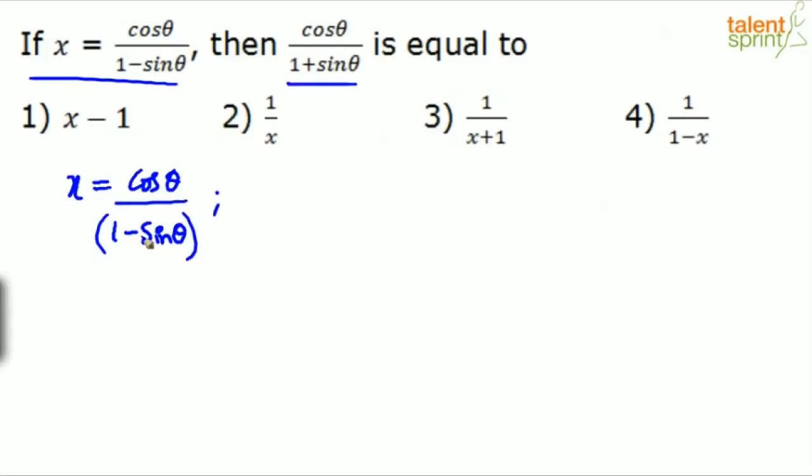What happens if you take theta as 90 here? Sine 90 is 1. Look at the denominator. The denominator is 1 minus sine 90. So if we take theta as 90, this becomes 1 minus 1, which is 0. And cos 90 is 0. 0 by 0 is undefined, which means x will be undefined. Can you take theta as 0? Yes, nothing wrong in taking theta as 0, because cos 0 will be 1. Sine 0 is 0.